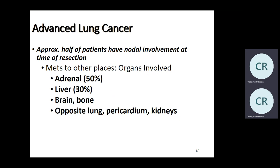In advanced lung cancer workup, metastases most commonly go to the adrenal gland — though adrenal adenomas are common incidental benign findings. Also metastasizes to liver and brain. Adenocarcinomas frequently go to the brain — I see lung cancer metastases to brain quite often. TTF1 staining confirms lung primary on brain metastasis.